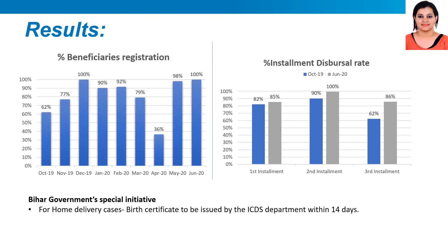This regular monitoring and supervision has resulted in positive outcomes. From October 2019 to June 2020, the beneficiary registration has gone up. Also, the installment dispersal rate, especially for the third installment, has significantly increased. Additionally, the Bihar government has decided to issue birth certificates for all home delivery cases within 14 days.